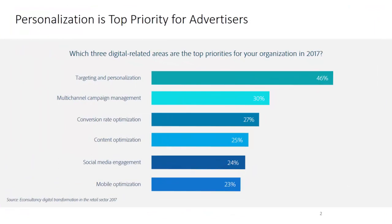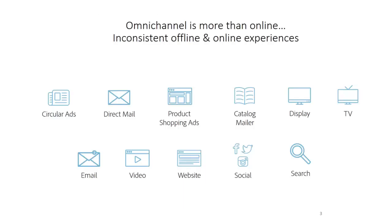Consumers are demanding more relevant ad experiences, and advertisers understand this. In a recent survey, advertisers were asked to rank their top three digital related areas of priority for 2017. Targeting and personalization was ranked in the top three by 46% of advertisers.